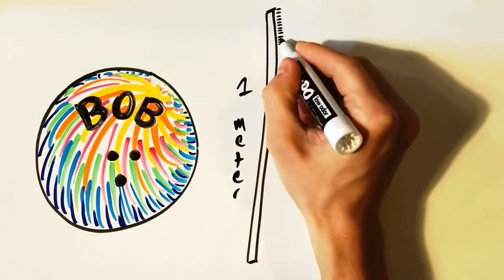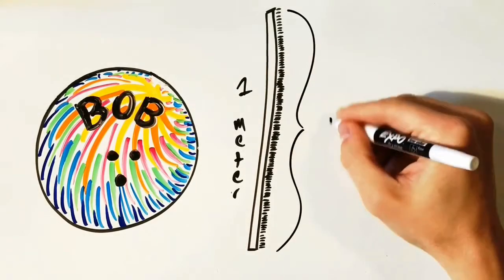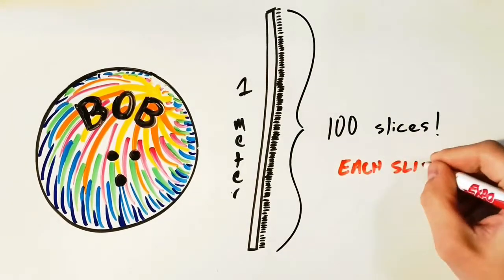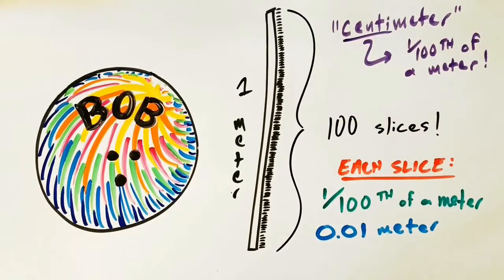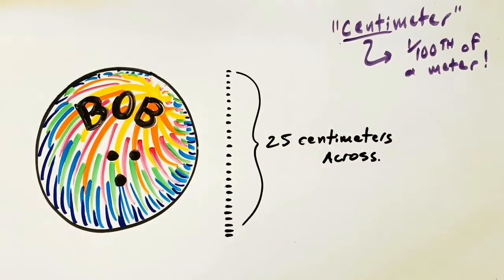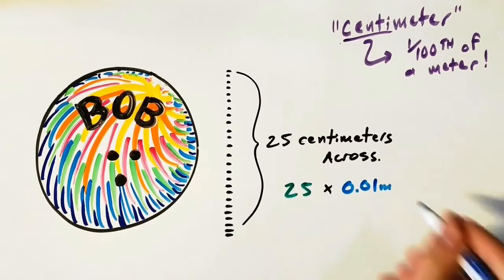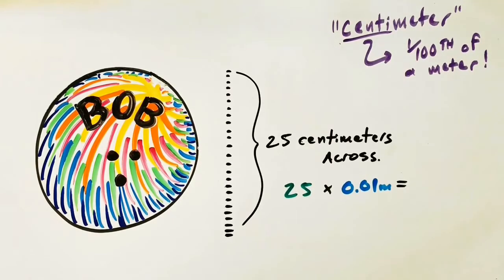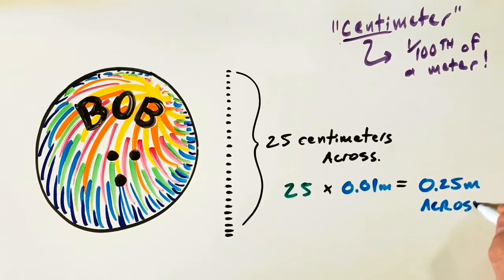Let's use the power of 10 on our meter. We take our meter and slice it into 100 pieces — that's just 10 times 10. Each slice is one hundredth of a meter, or 0.01 meters; we call that a centimeter. Our bowling ball is about 25 centimeters across. If we take 25 times 0.01 meters, that gives us 0.25 meters across — that's how we describe our bowling ball.